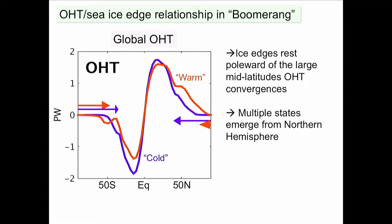Why do we have those stable states? It's the same story as before. If you look at the ocean heat transport in the warm (red) and cold (blue) states, you get the same picture: lots of heat being pushed away from the equator into the mid-latitudes, released to the atmosphere around 40–50 degrees of latitude. In the northern basin you have a state with very little sea ice, and then a state that extends to the point where maximum convergence of heat is released to the atmosphere, which is able to stop the progression of the sea ice.